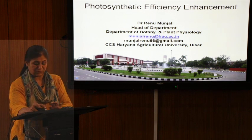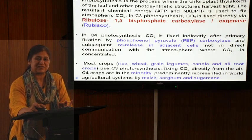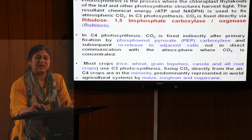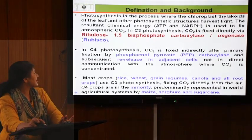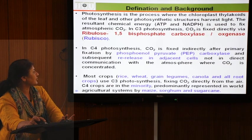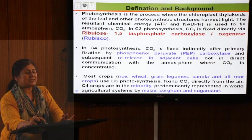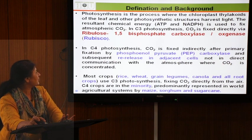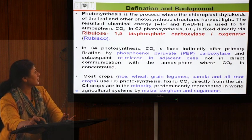First, we have to clarify our concept of photosynthesis. This topic has been taught to students starting from their third class. Photosynthesis is the process where the chloroplast thylakoids of the leaf, as well as other photosynthetic structures — any green part of the plant that can perform photosynthesis — are involved.